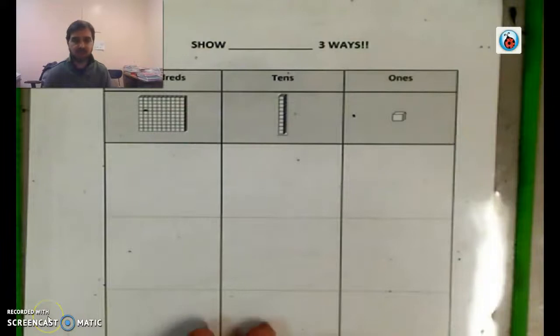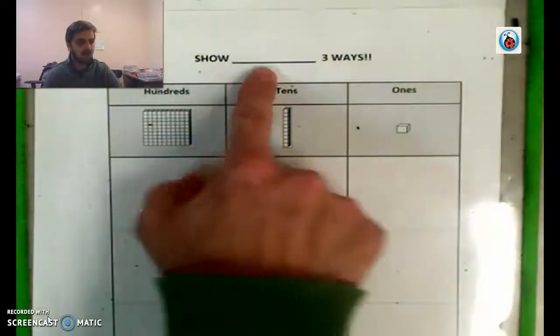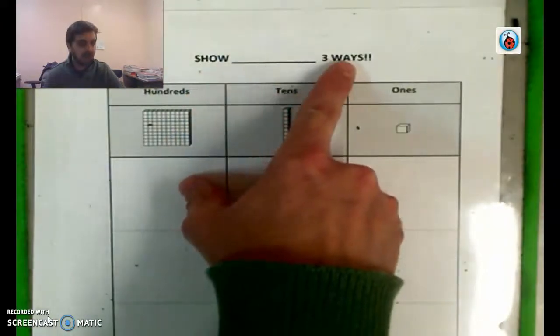But I'm not going to just have you do it on your own. We'll work on it together. So what I would like you to do, and this won't be a long video, but we'll do it for a few minutes, is take out this piece of paper. It says show blank three ways.